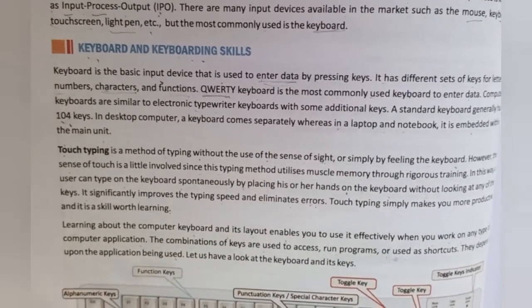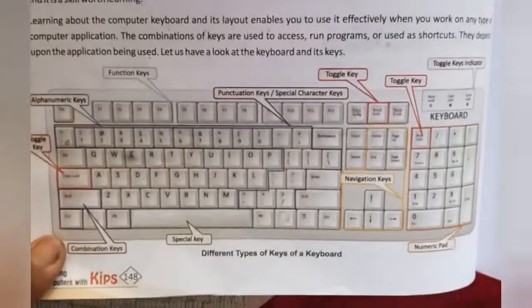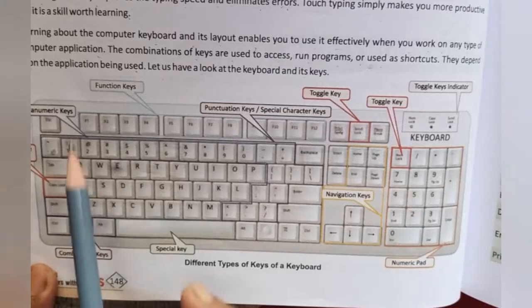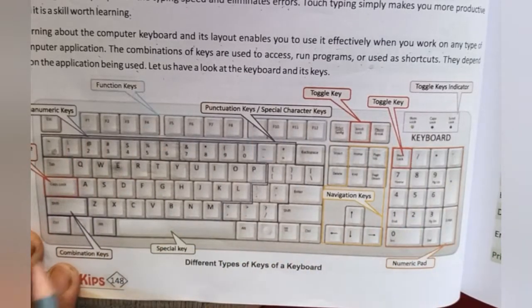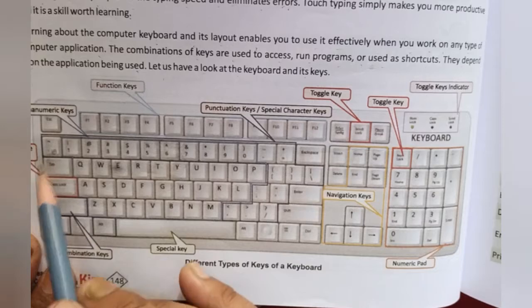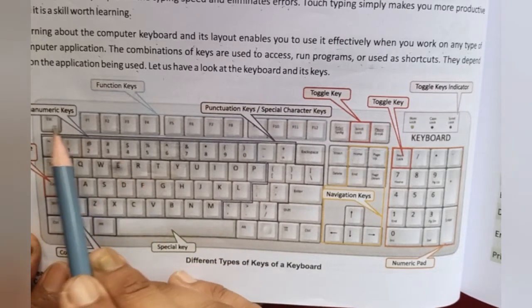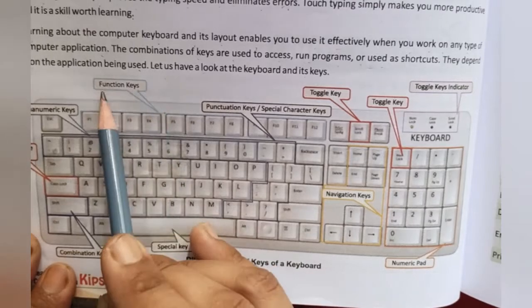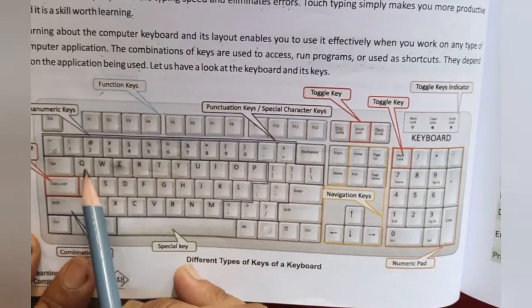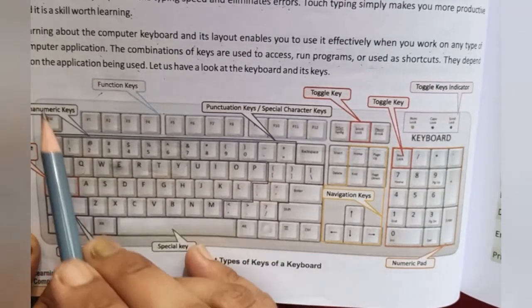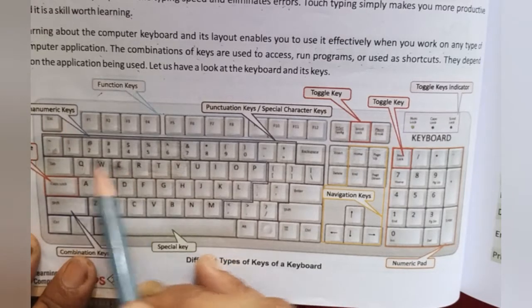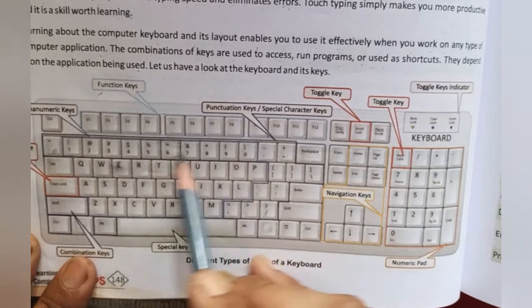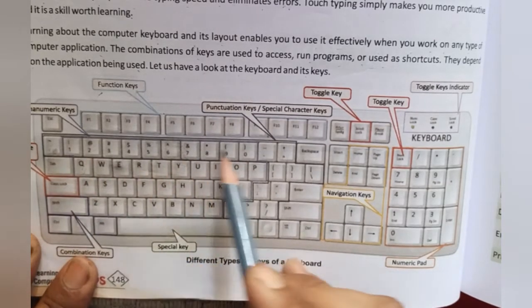Let us have a look at the keyboard and its keys. There are different types of keys on a standard keyboard. The first row has function keys. A to Z are the alphabetic keys, also called alpha keys. Numbers are numeric or digit keys. Caps Lock is a toggle key. Symbol keys are called punctuation or special character keys.